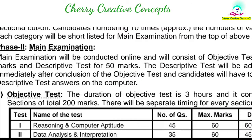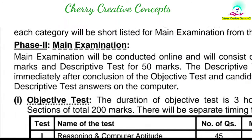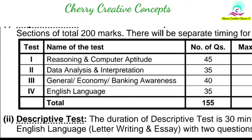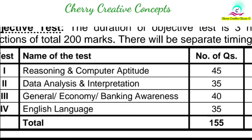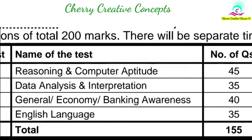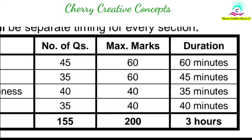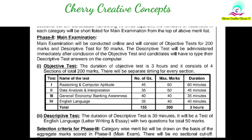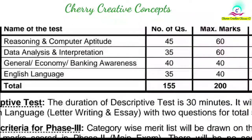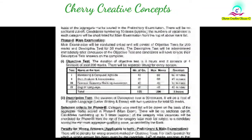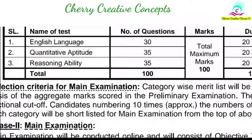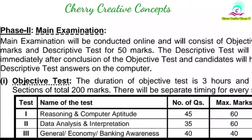In the main exam, there are two parts: objective and descriptive. There is a slight difference for each category. The objective part carries 200 marks for 3 hours, with sections including Computer Aptitude, General Economy, Banking Awareness, and a separate section for Data Analysis and Interpretation. The descriptive test involves letter writing and essay writing, carrying 50 marks. Marks above the cutoff in the main exam play an important role in selection.